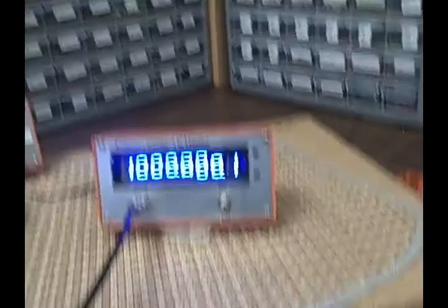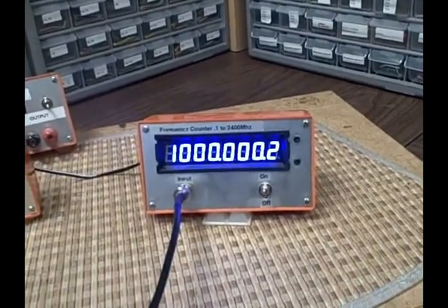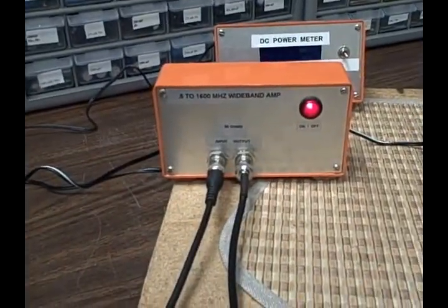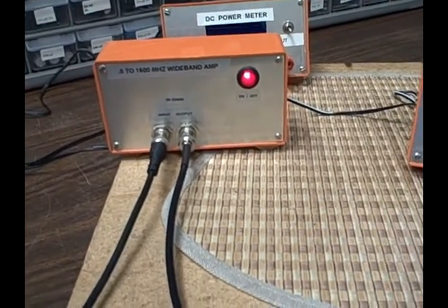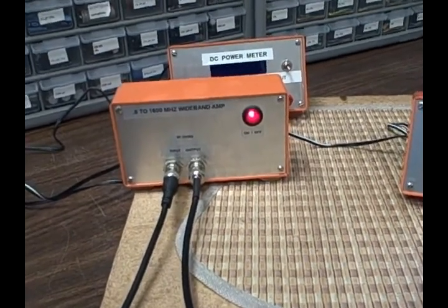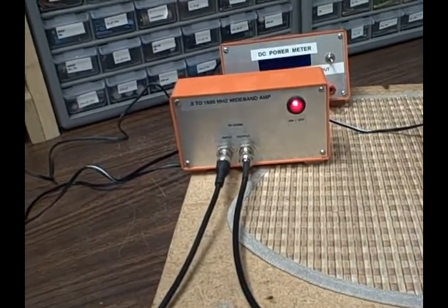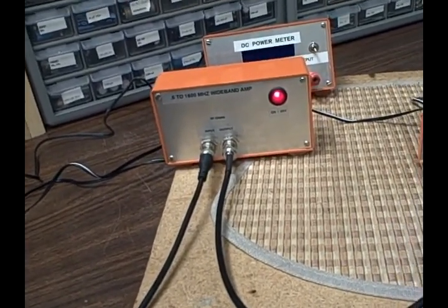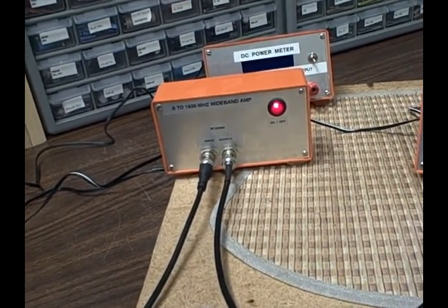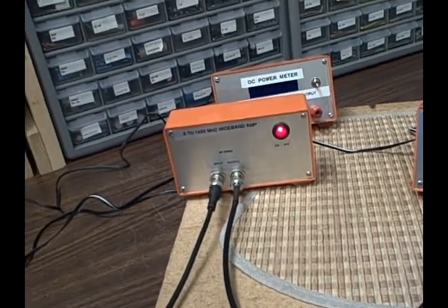Okay, so here we've attached the input of the cymometer or counter frequency counter to this wideband amplifier, which is another project I'm going to display in a later review. But this project will amplify signals between point five to one point six gigahertz. So point five megahertz to one point six gigahertz.